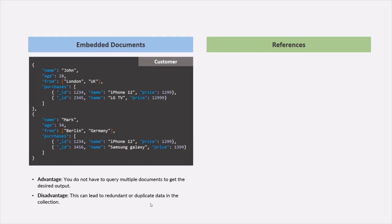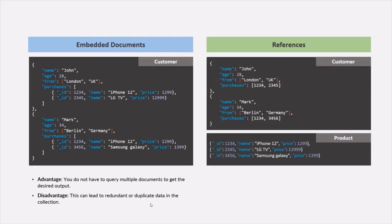The solution to this problem is to use references for creating a relation in MongoDB. For example, let's say we have a customer collection and a product collection — two customers in the customer collection and three products in the product collection. In the embedded documents approach, we specified the product details in the customer document itself. But in the references approach, we are not specifying the product details in the purchases field. Instead, we are specifying the IDs of those products. We are not storing the product details in the customer documents; we are storing the ID of the products from the product collection. So the customer collection is referencing the product collection using the ID of the product documents.